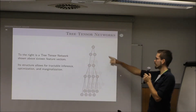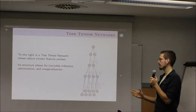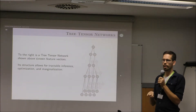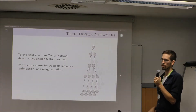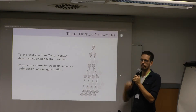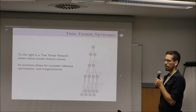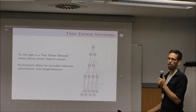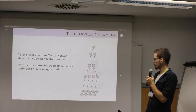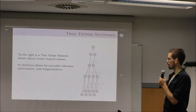You can see that this object has only one free leg at the top, so it corresponds to a vector. And this vector, once we do all of the contractions, is exactly the dot products of our different weights for the different labels. So we have some number of classes, and we have a vector of those. Because we can efficiently evaluate this model, we can also optimize it. I'll show you some results in a minute for a model like this applied to the MNIST dataset.